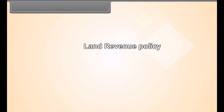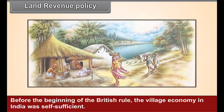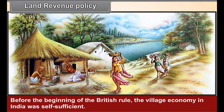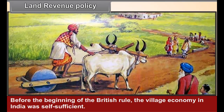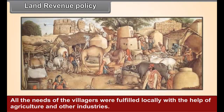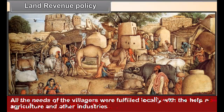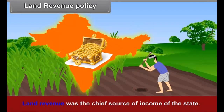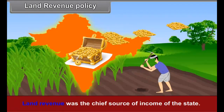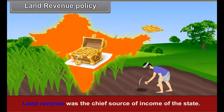Land Revenue Policy. Before the beginning of the British rule, the village economy in India was self-sufficient. All the needs of the villagers were fulfilled locally with the help of agriculture and other industries. Land revenue was the chief source of income of the state.